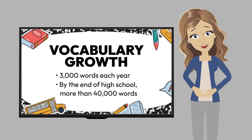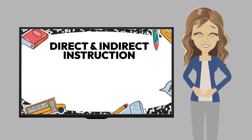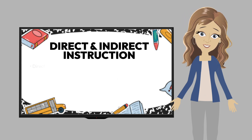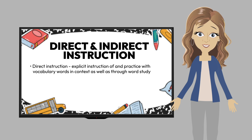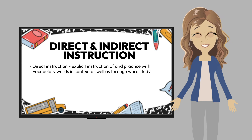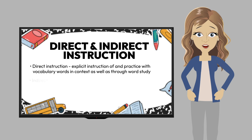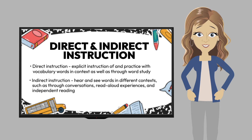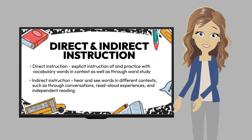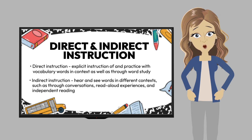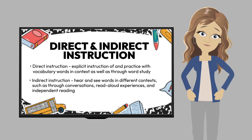We can help students grow their vocabulary through both direct and indirect instruction. Direct instruction is where you provide explicit instruction of and practice with vocabulary words in context, as well as through word study. Indirect instruction occurs when students hear and see those words in different contexts, such as through conversations, read aloud experiences, and independent reading.